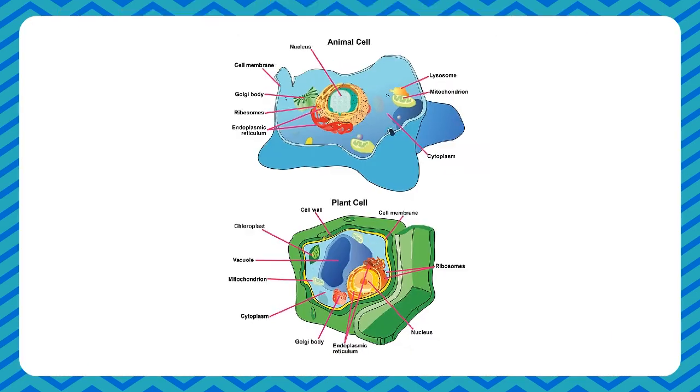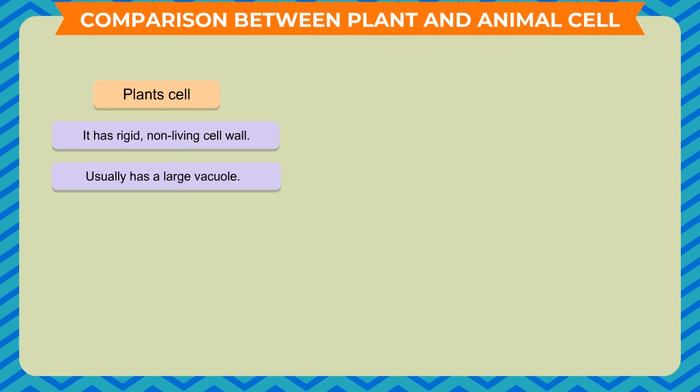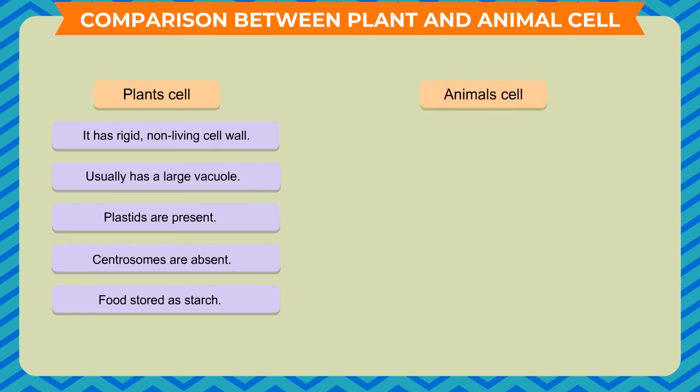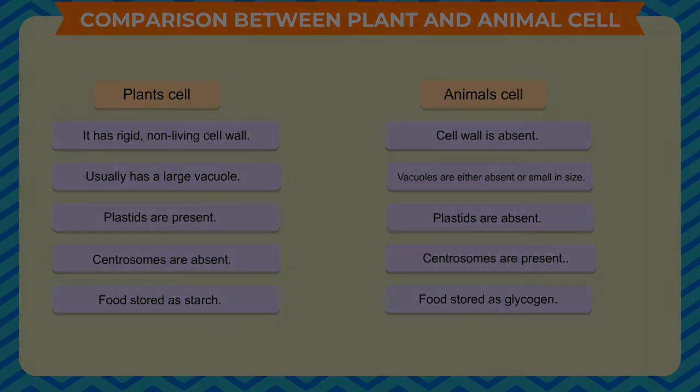Comparison between plant and animal cell. Plant cell: It has rigid, non-living cell wall. Usually has a large vacuole. Plastids are present. Centrosomes are absent. Food stored as starch. Animal cell: Cell wall is absent. Vacuoles are either absent or small in size. Plastids are absent. Centrosomes are present. Food stored as glycogen.